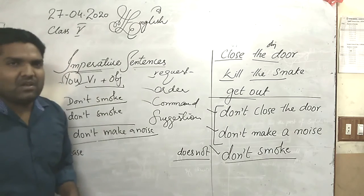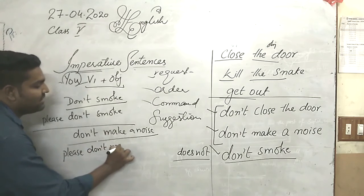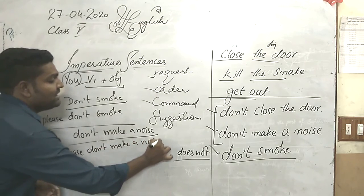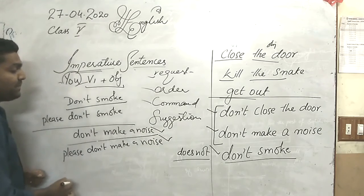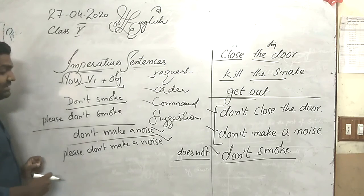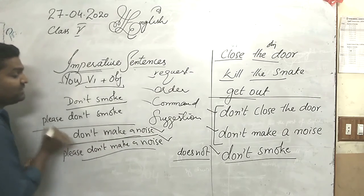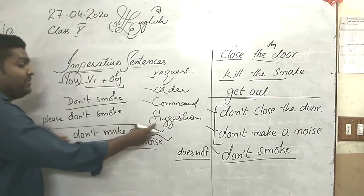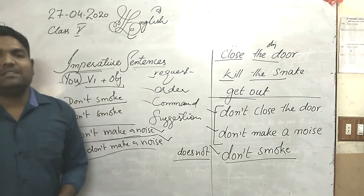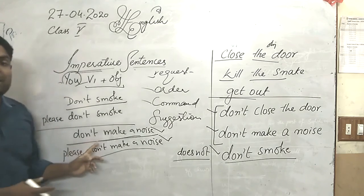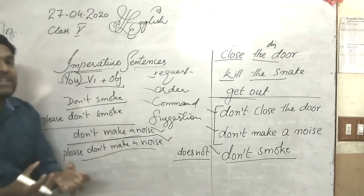But if someone is busy and working, they might say 'I'm busy, I'm working, so please don't make a noise.' You can see the difference — both sentences are the same, but it depends on the situation and the tone you are using. 'Don't make a noise' is an order, and 'Please don't make a noise' is a request. It depends on the person and the situation.